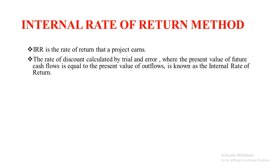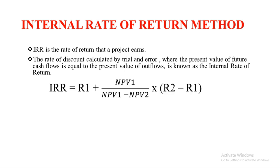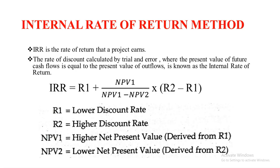In this, we'll have something called a PV factor discounting rate. It is calculated on the basis of trial and error, meaning we'll be considering multiple PV factor rates and we will try to come to a conclusion on what the rate of return that the project can earn will be. The formula for IRR is: R1 plus NPV1 upon (NPV1 minus NPV2) into (R2 minus R1). R1 stands for the lower discount rate; R2 is the higher discount rate, as there will be multiple PV factor rates given to us.